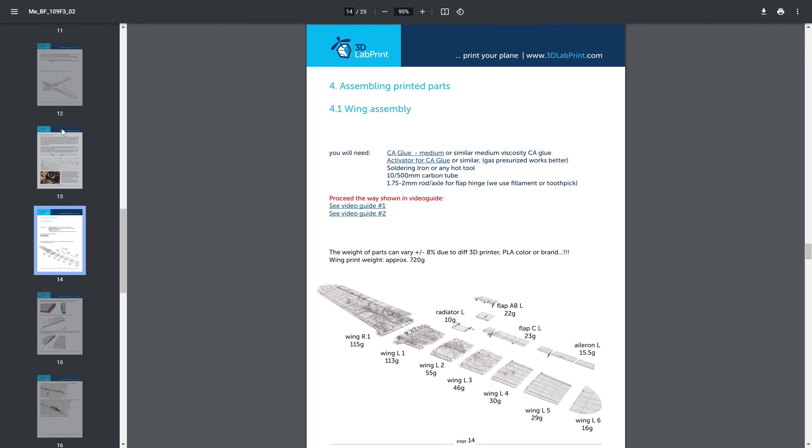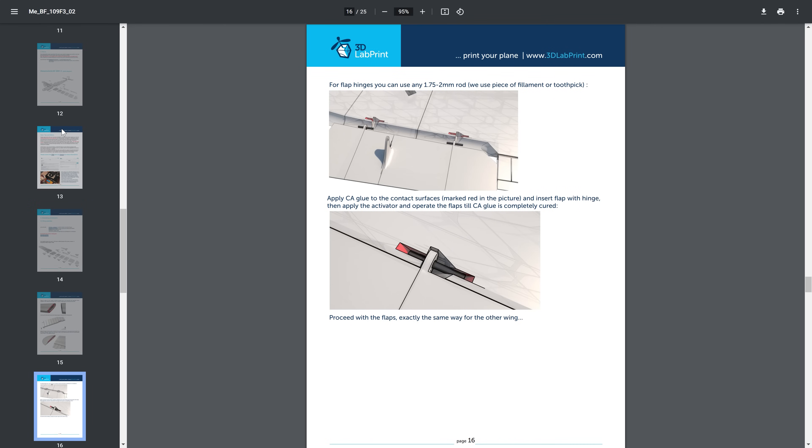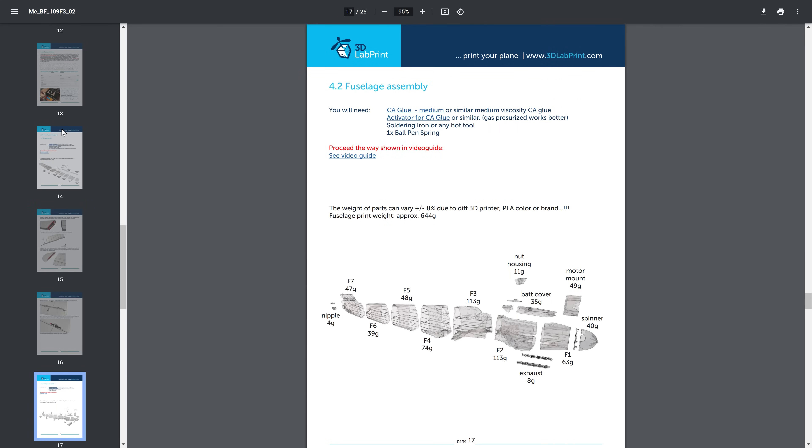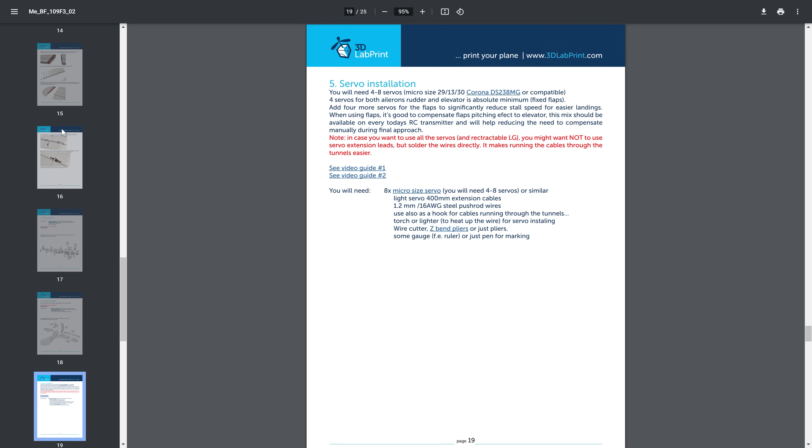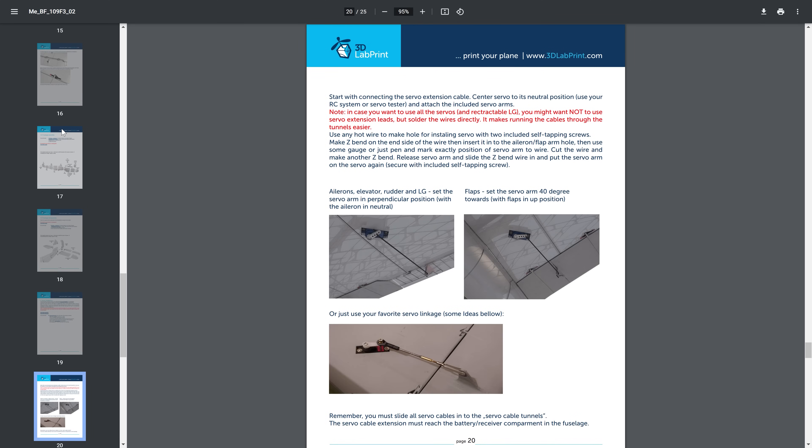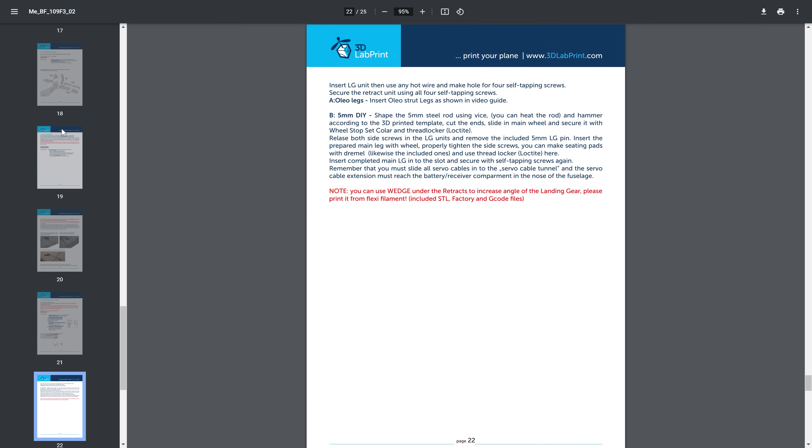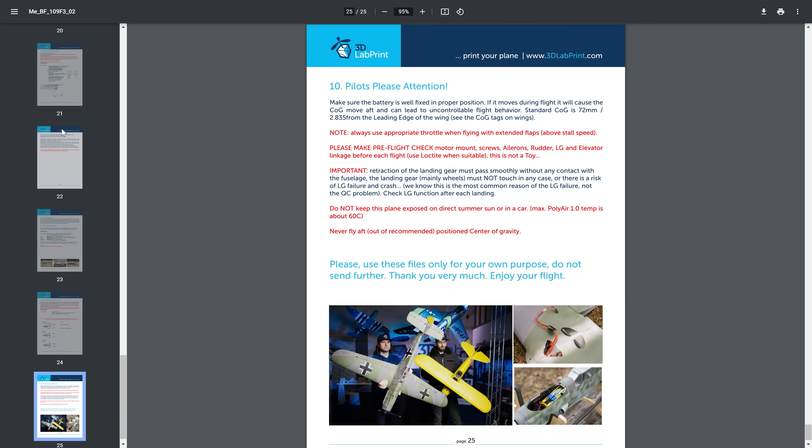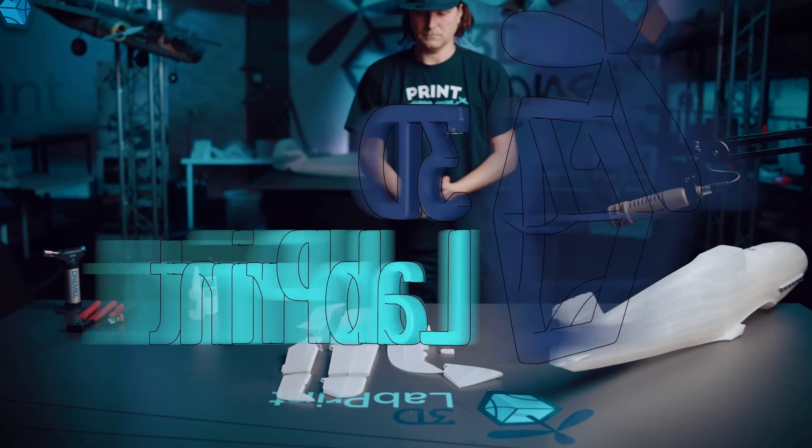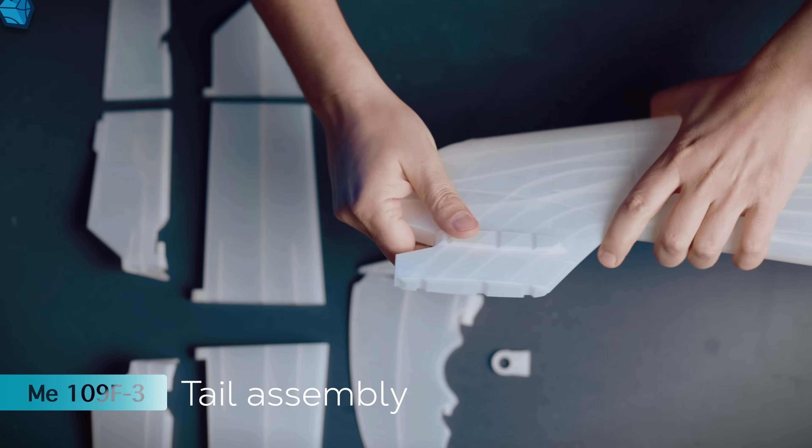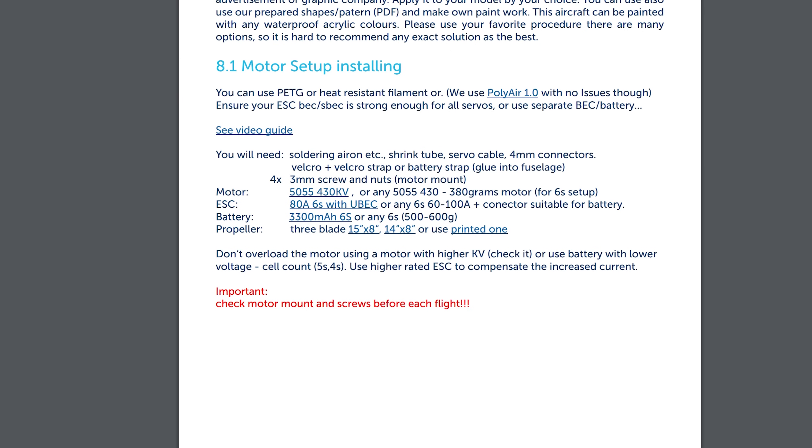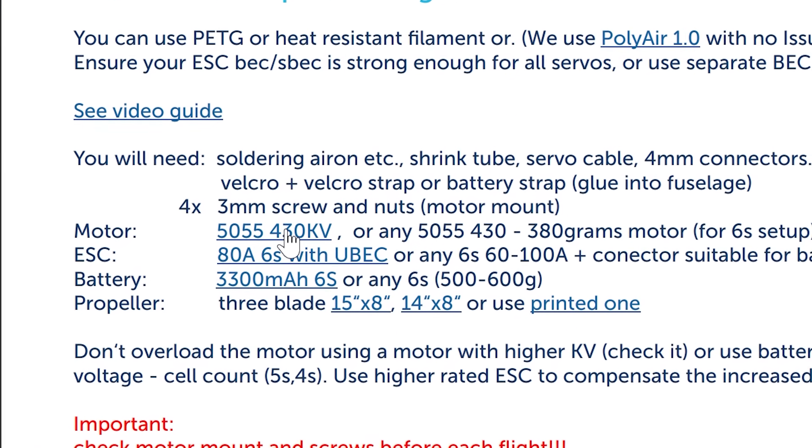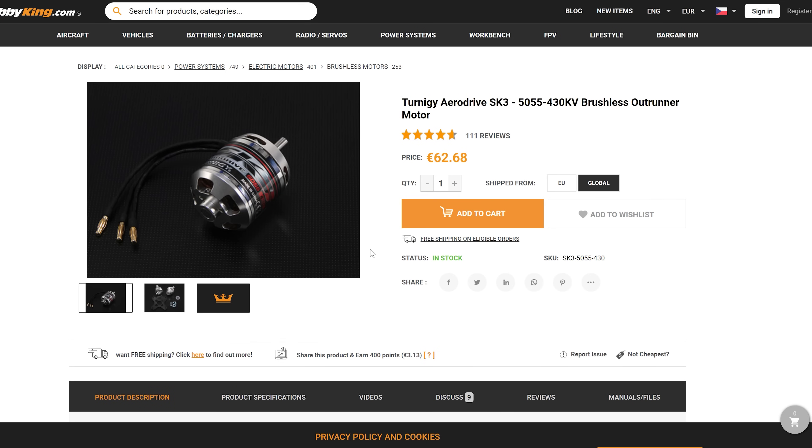We provide easy to understand assembly instructions with each of our models, in both PDF and video format. The instructions are divided into chapters according to the parts they cover, like the fuselage, wings, electronics, engine, servos and each chapter is accompanied by video and links to websites where you can buy the recommended equipment.